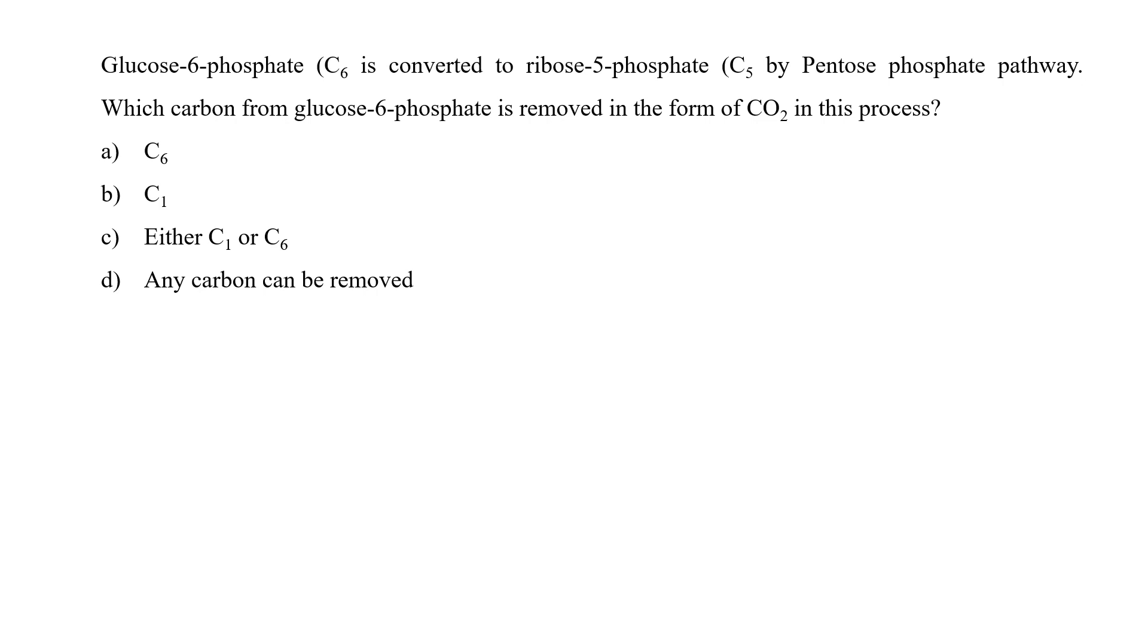Glucose 6-phosphate, which is a C6 carbon, is converted to ribulose 5-phosphate by pentose phosphate pathway. Which carbon from glucose 6-phosphate is removed in the form of CO2 in this process?